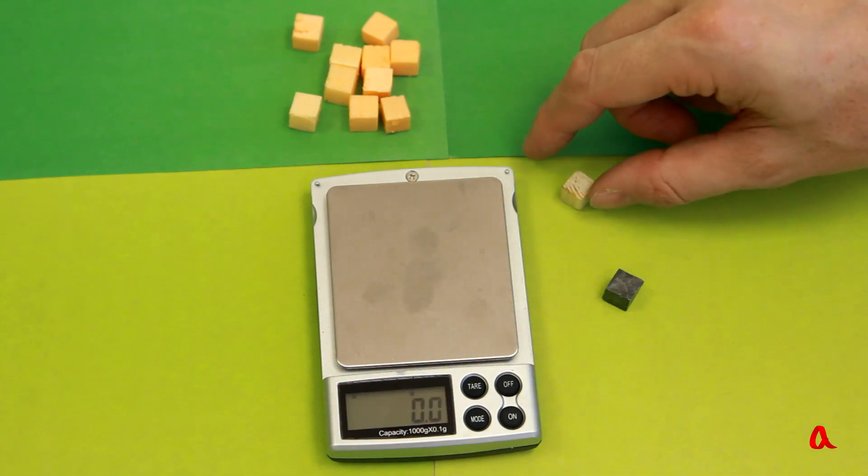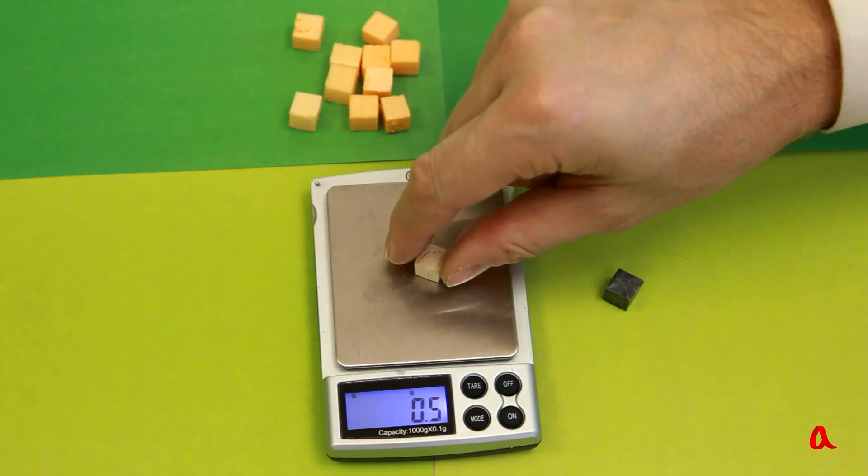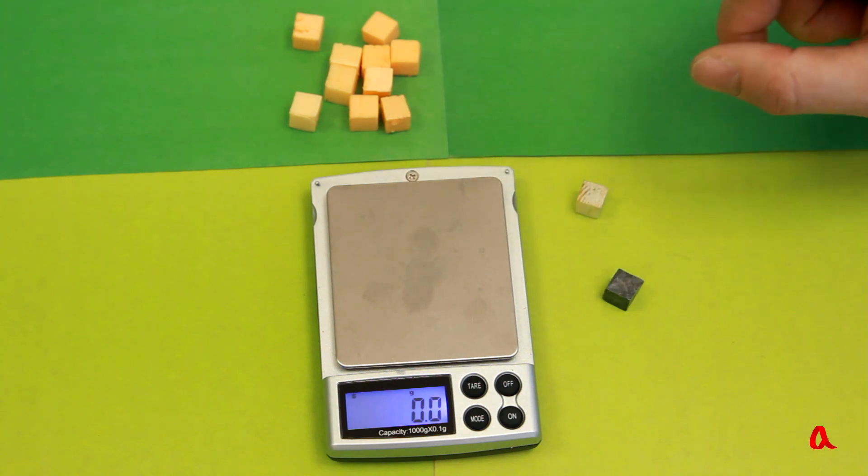Let us now take a wooden cube of the same volume. It weighs 0.5 gram. So, the density of wood is 0.5 gram per cubic centimeter. We should note that this was dry pine wood because types of wood may differ considerably in their density.